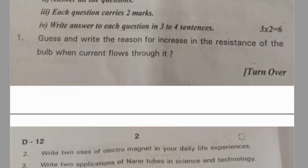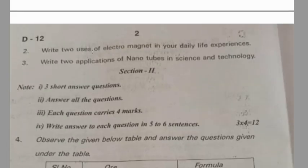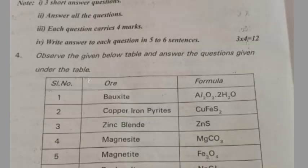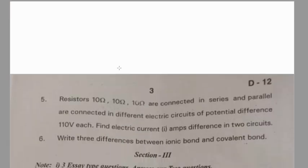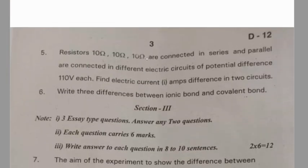Hyderabad practice paper: Guess and write the reasons for the increase in resistance of the bulb when current flows through it. Write two uses of electromagnets in your daily life. Write two applications of nanotubes in science and technology. Section 2: one table question. Three resistors of 10 ohms each are connected in series and parallel in different electric circuits with a potential difference of 110 volts each — find the electric current and the difference in the two circuits. Write three differences between ionic bond and covalent bond.